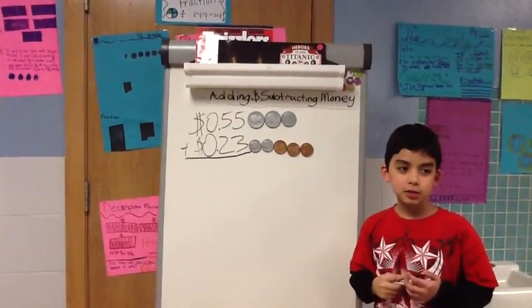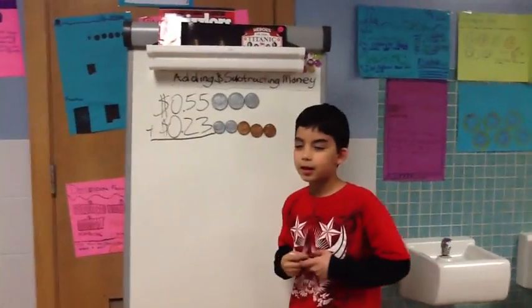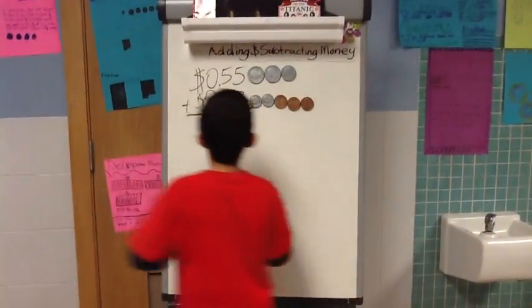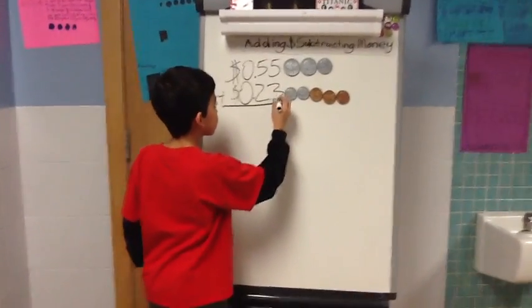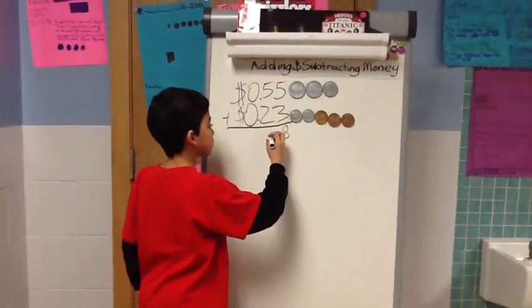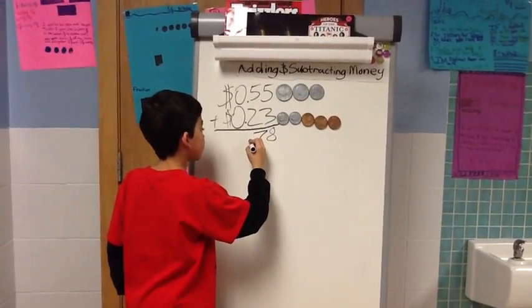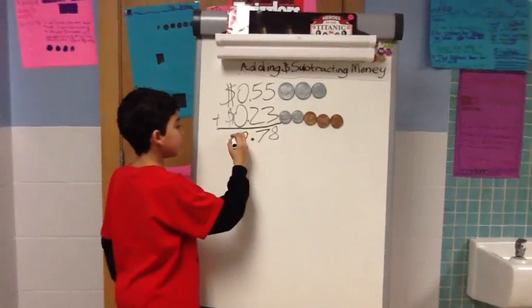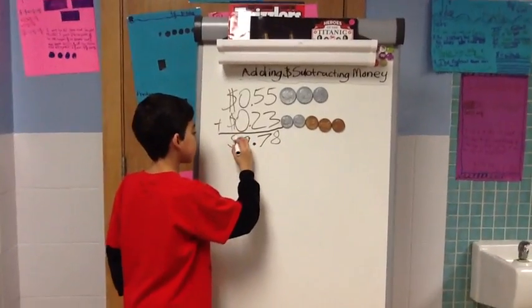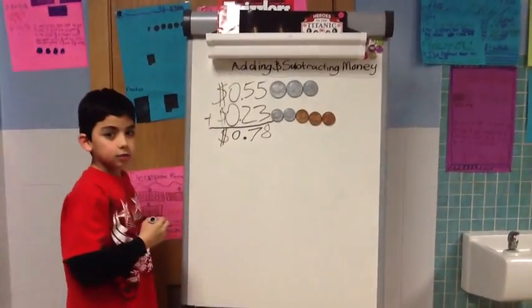We're going to use these coins after we're done doing the algorithm. 5 plus 3 is 8. 50 plus 20 is 70. Bring down your decimal. 0 plus 0 is 0. Bring down your dollar sign. We have 78 cents so far.